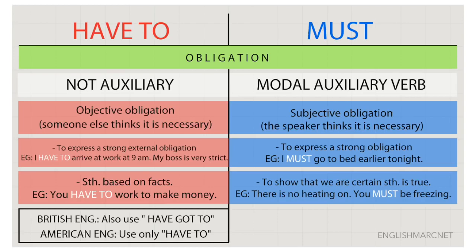'Must,' instead, is used to show that we are certain something is true. For example: there is no heating on — heating is the device in your house that produces heat — so 'you must be freezing.' That shows we are certain something is true.